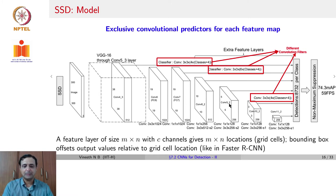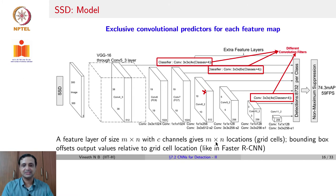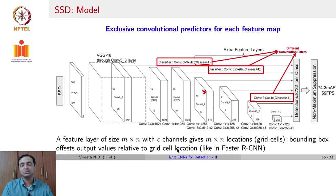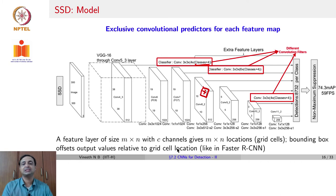If you take any one of these feature maps — say a feature map of size M×N with C channels — that gives M×N locations, where each pixel location could be the center of an object. Each of them is like a grid cell, similar to YOLO, and the bounding box offset values are relative to that grid cell location. Each of these convolutional feature maps predicts (classes + 4) values — that is, a class probability for each class plus 4 bounding box offset values, corresponding to each pixel location in the convolutional feature maps.